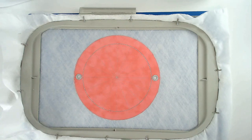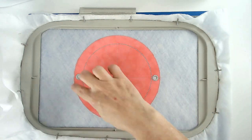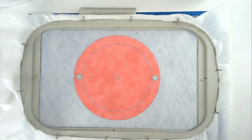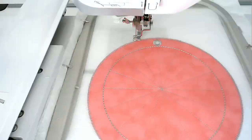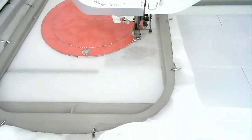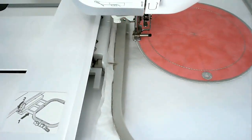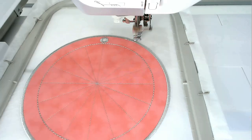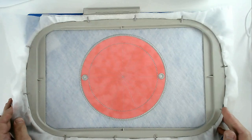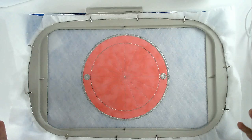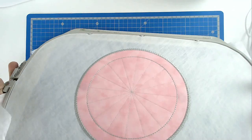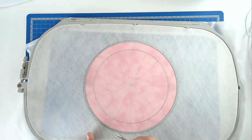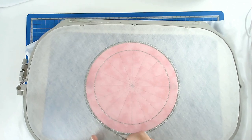Load your matching bobbin and thread color for the satin stitch border into your machine, and then you're going to stitch round number six. Now that that's stitched, we're going to remove this from the hoop, so turn your hoop over, and carefully trim around the edge, taking care not to cut your stitches.